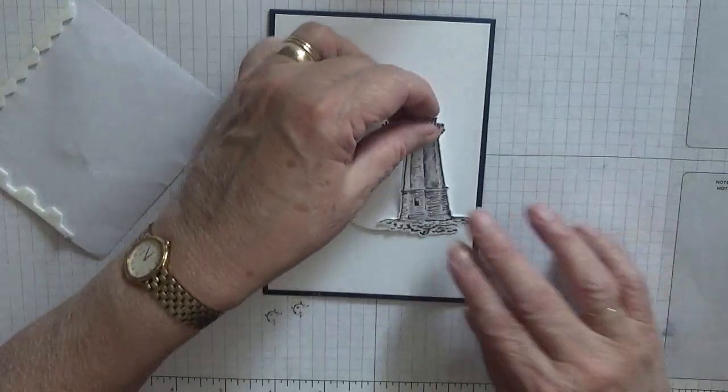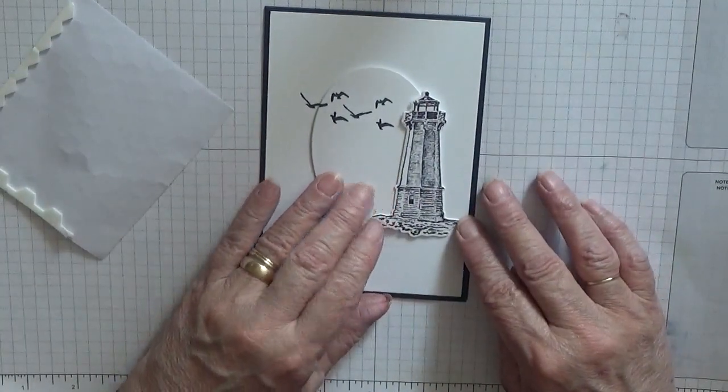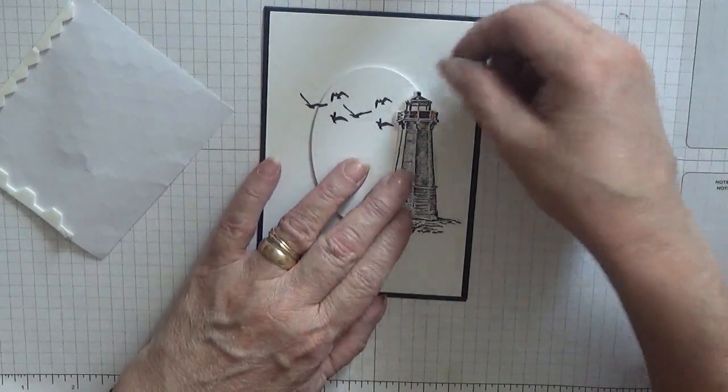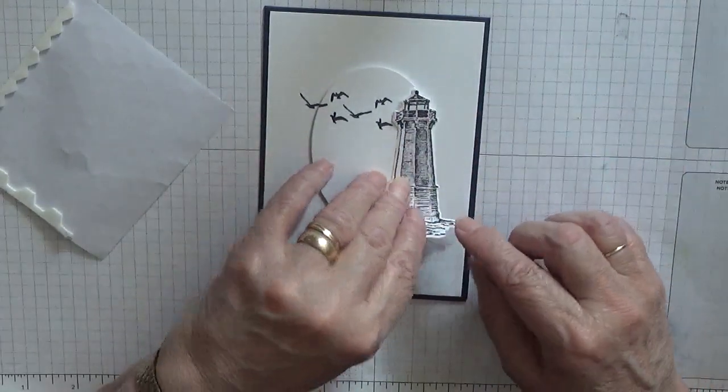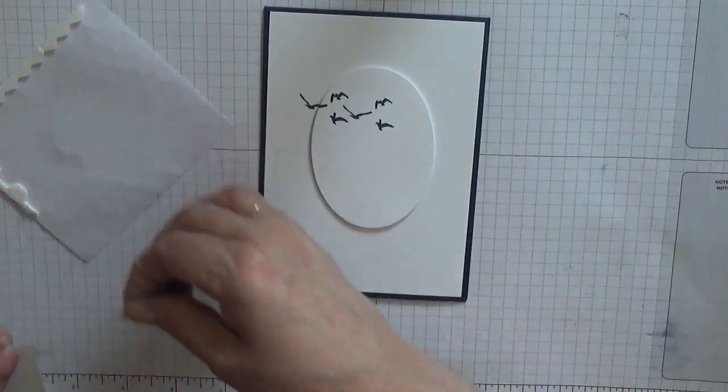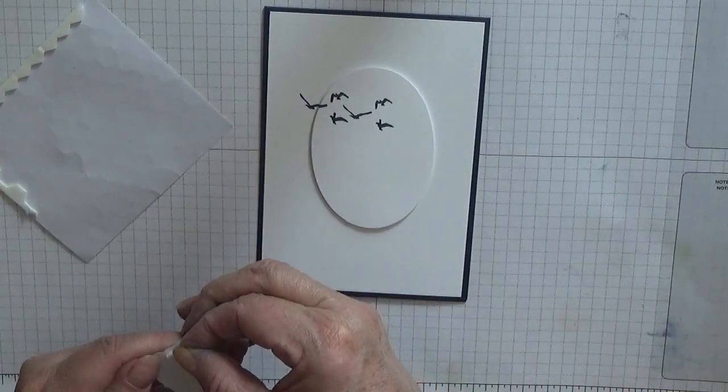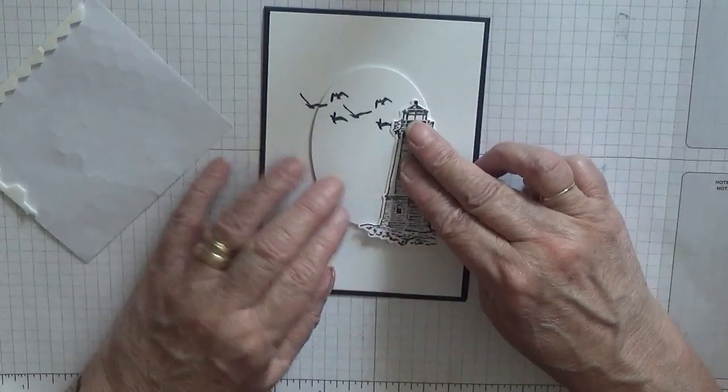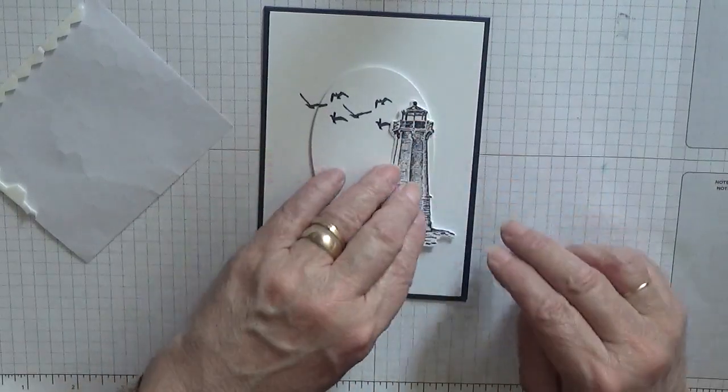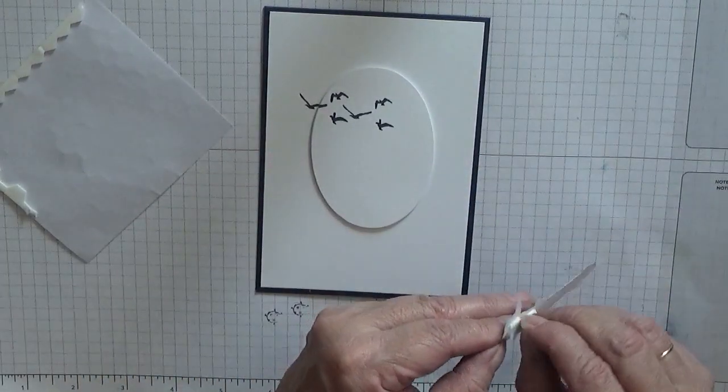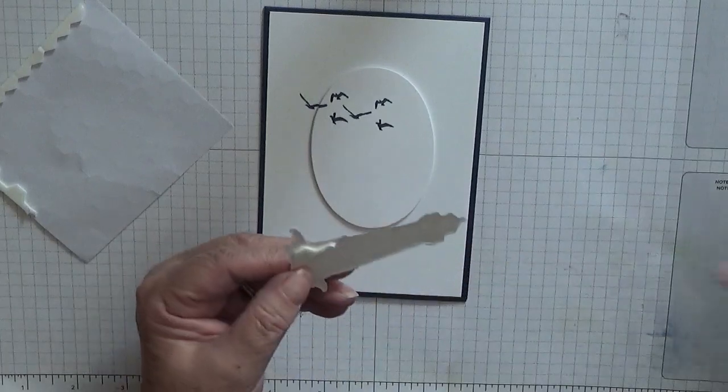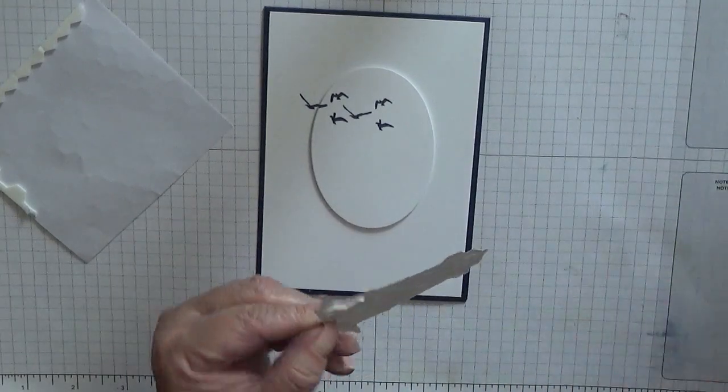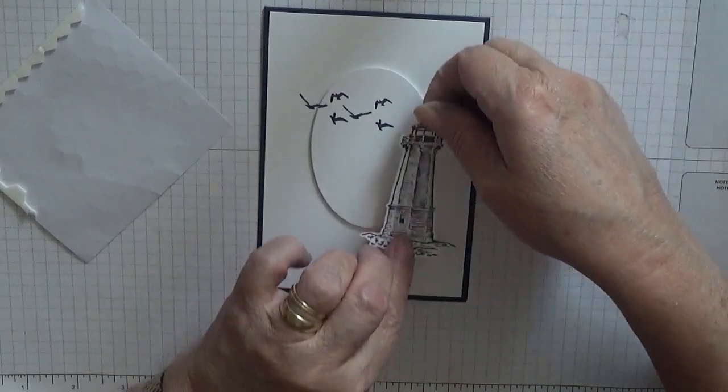The lighthouse we're going to stick there. Don't want to put it on the bird, but we just need a bit of a dimensional in this corner, just there. That's fine. Take the backing off and we'll glue the rest of the lighthouse.